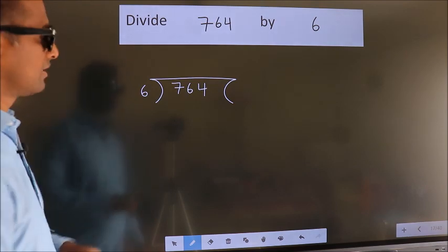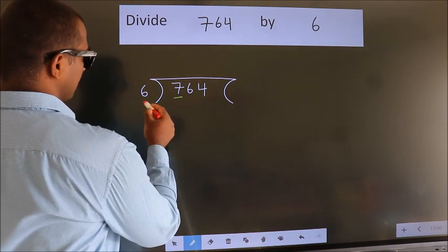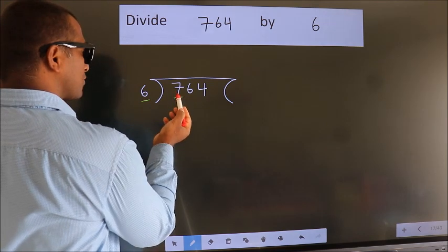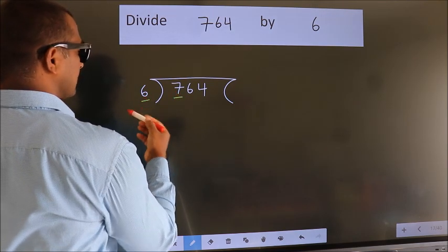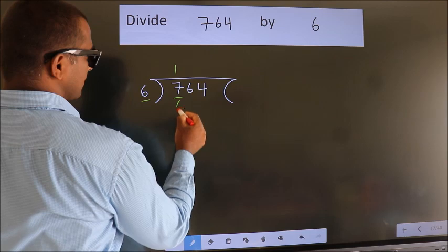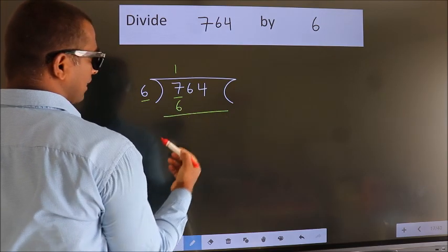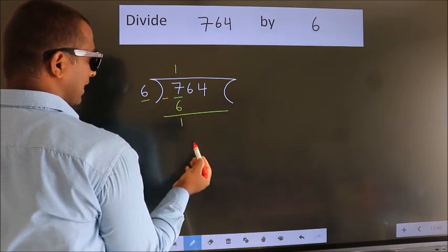Next, here we have 7. Here 6. A number close to 7 in the 6 table is 6 once 6. Now we should subtract. We get 1.